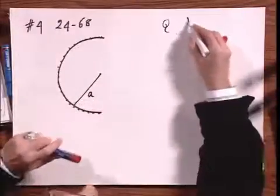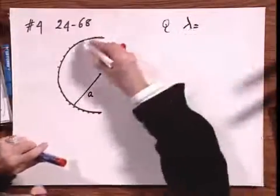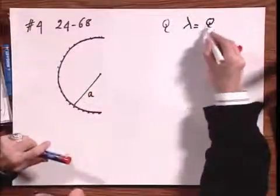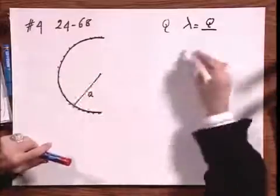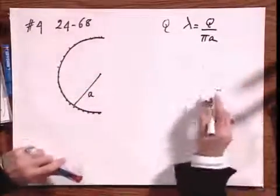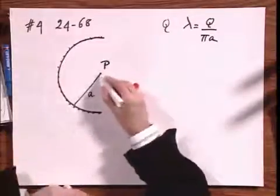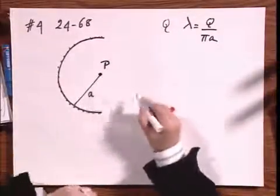It's only half an arc. And so lambda, if you want to express it in how many coulombs there are per meter, lambda would be Q divided by half the circumference, so that is pi A. And now you're being asked, what is the potential at that point P, right at the center of that arc?